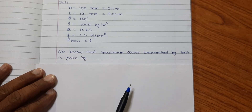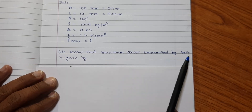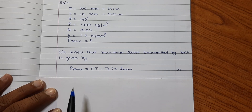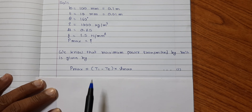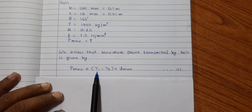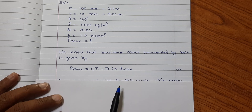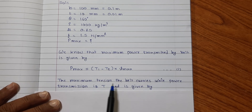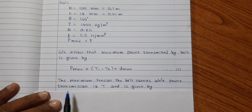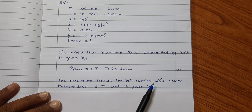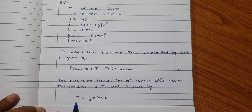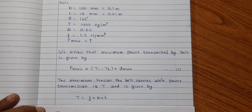We know that the maximum power transmitted by the belt is given by P_max = (T1 − T2) × V_max, where T1 is the tight side tension and T2 is the slack side tension, and V_max is the maximum velocity of the belt. The maximum tension the belt carries during power transmission is T = permissible stress × cross-sectional area = F × B × t.